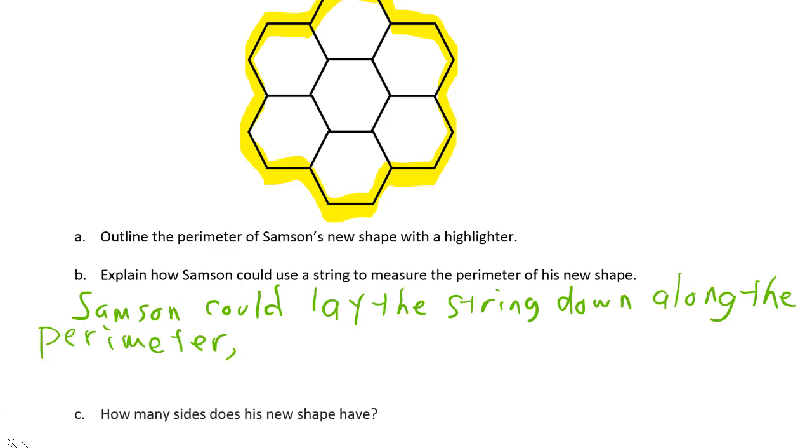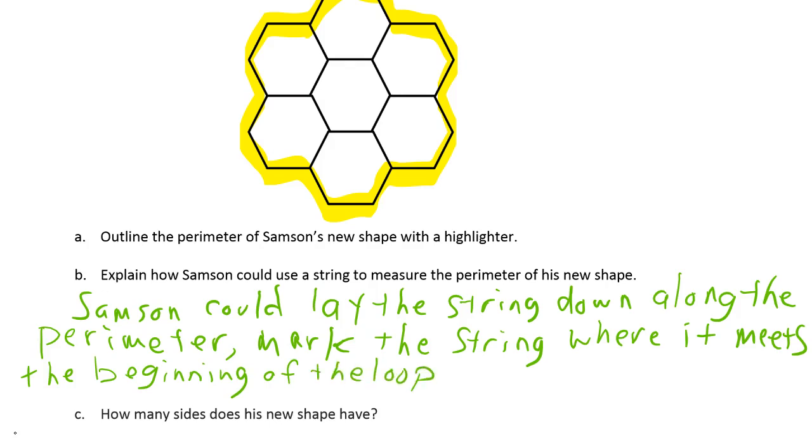Mark where it meets the beginning of the loop. Then straighten the string and measure it with a ruler.